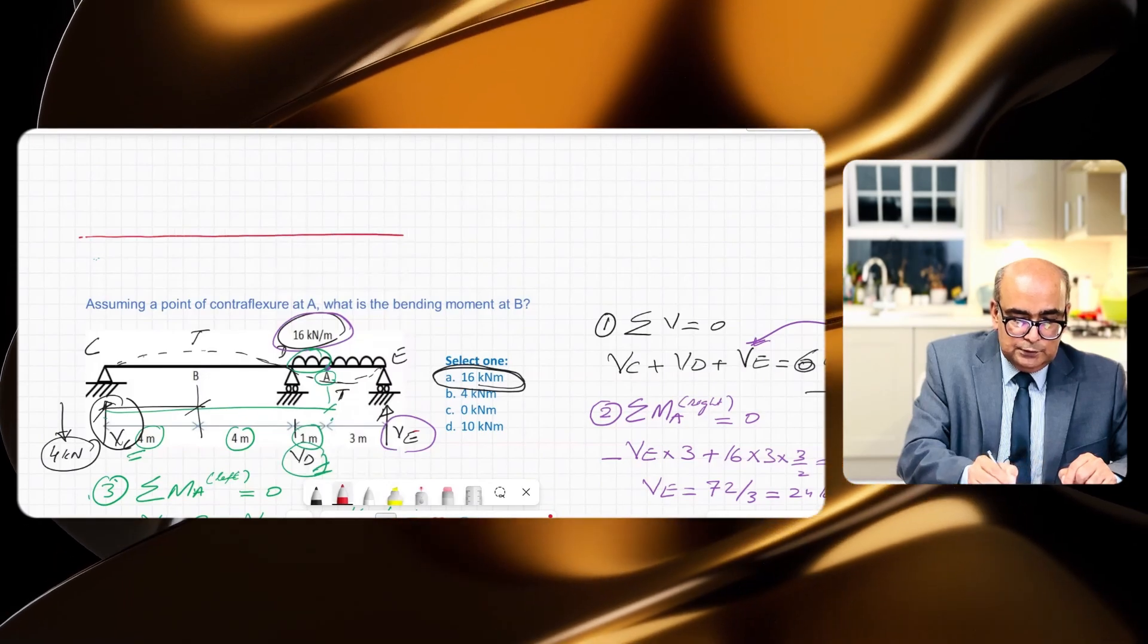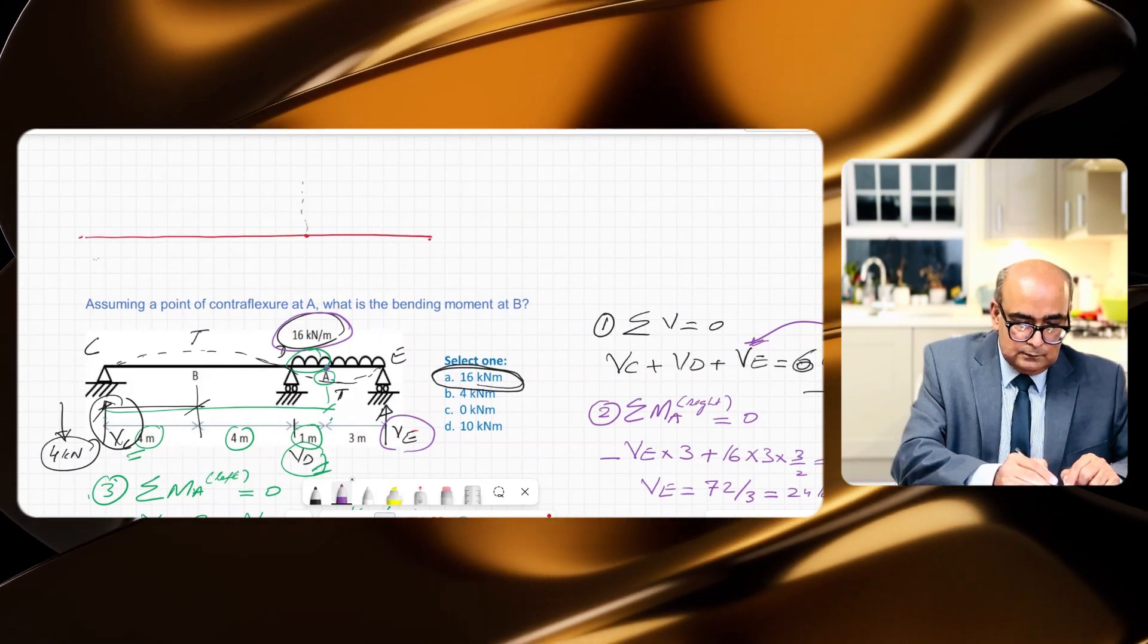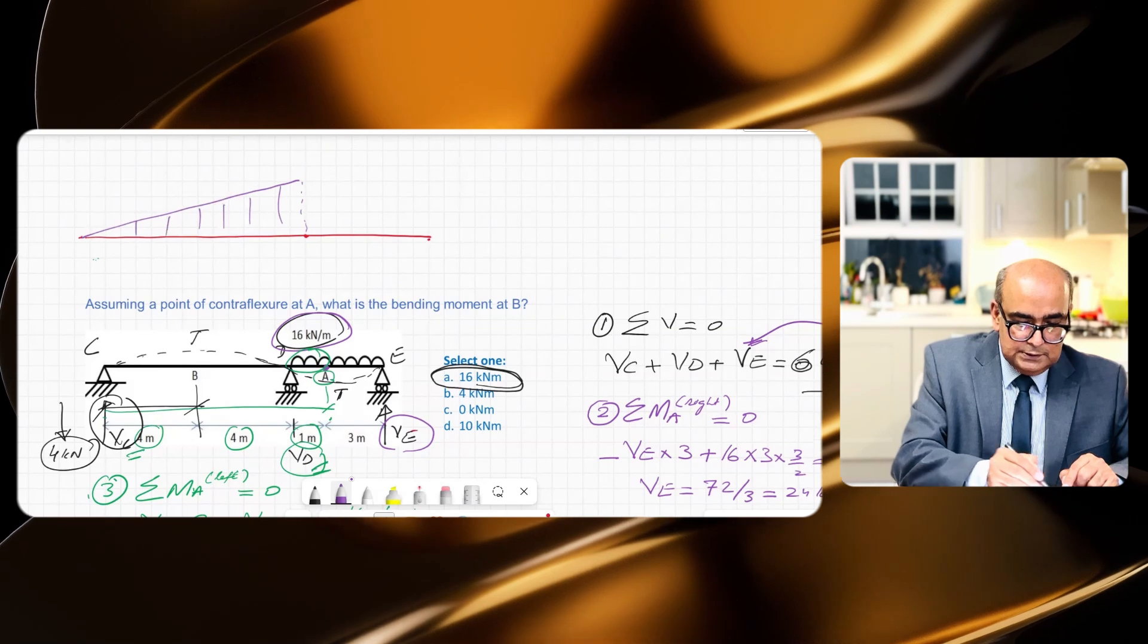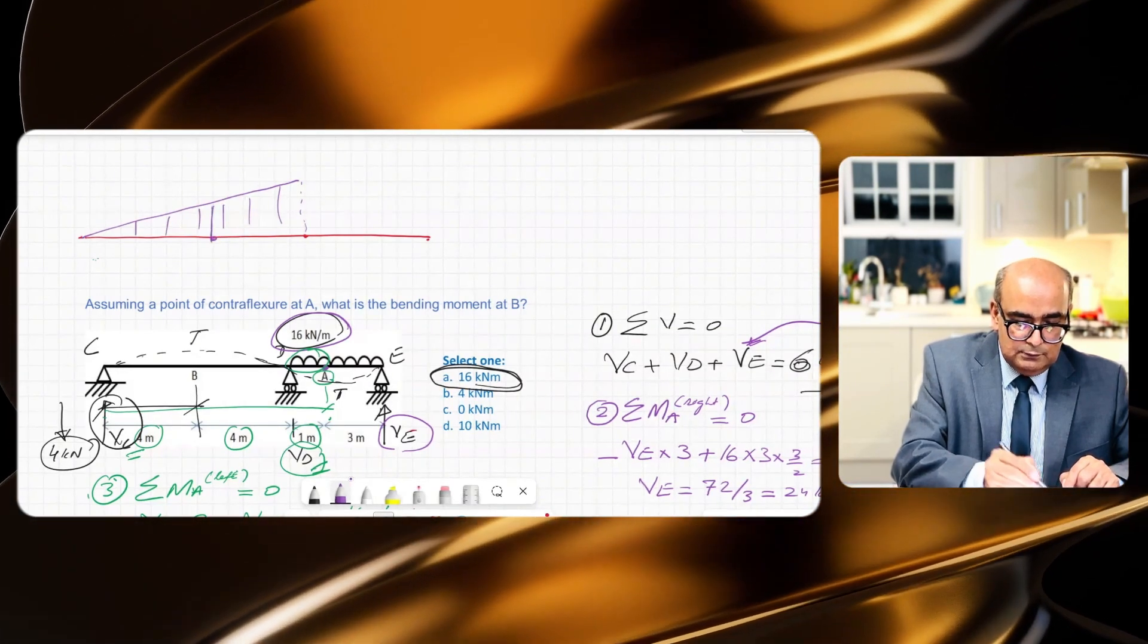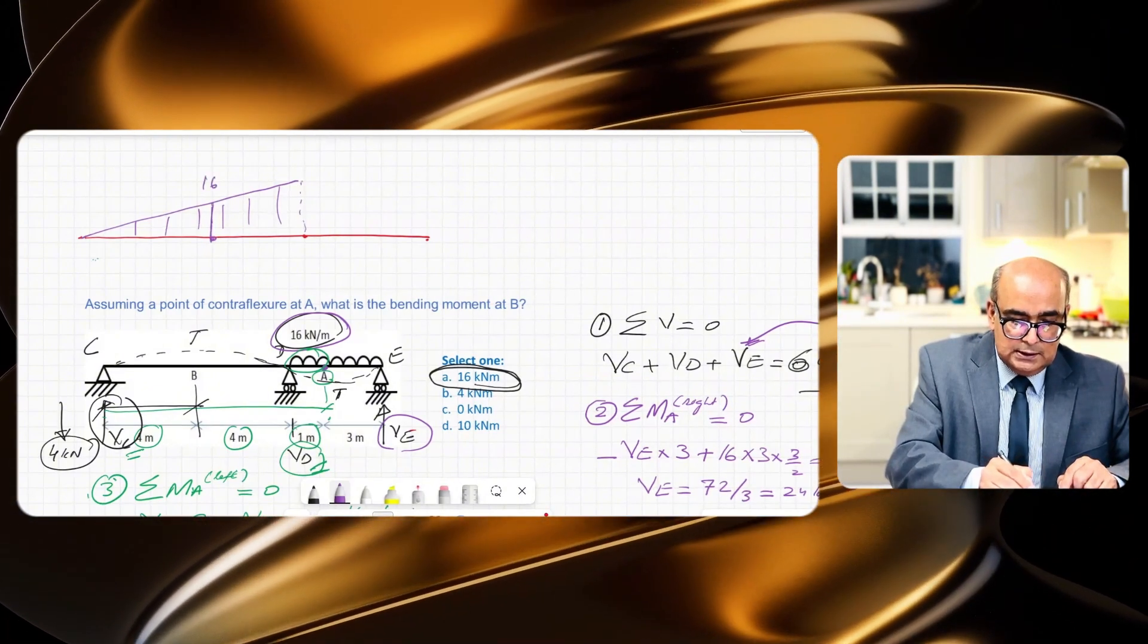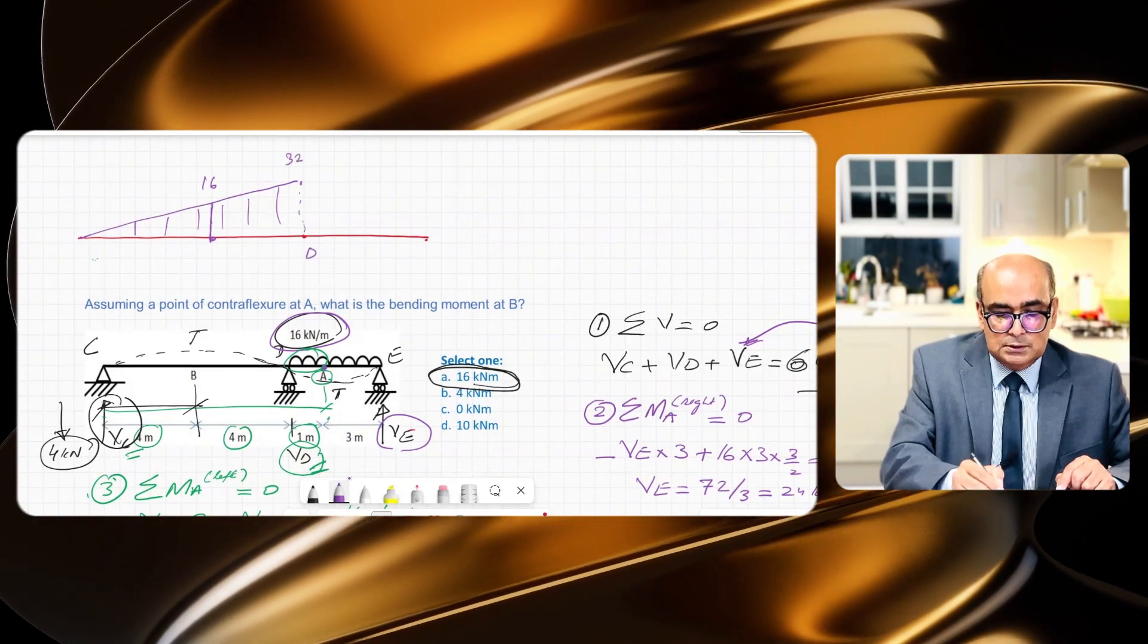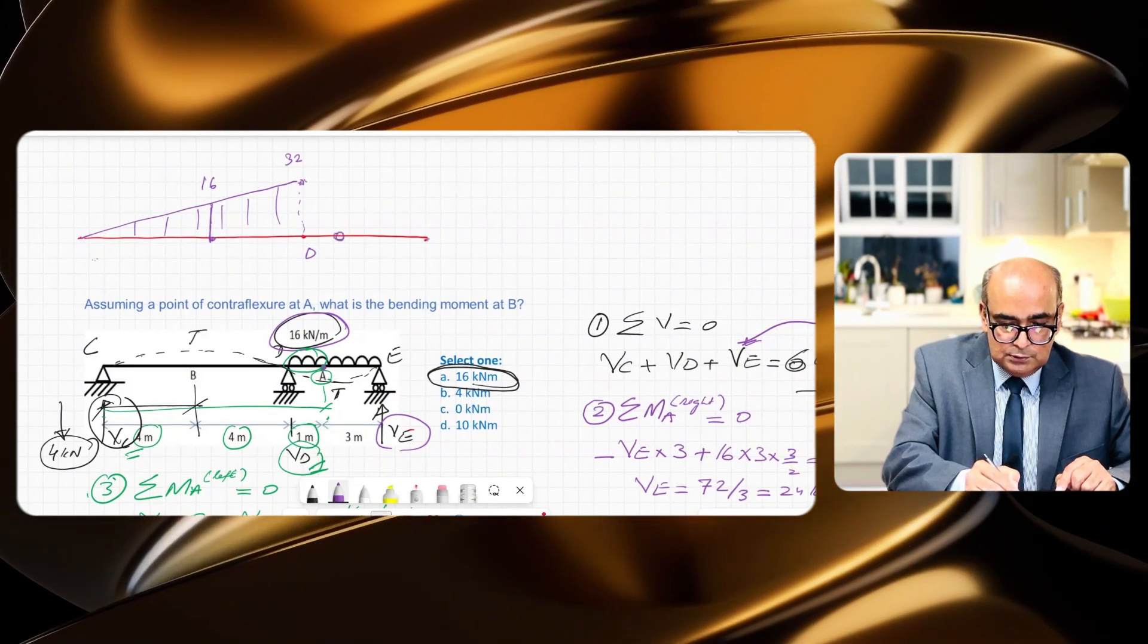If you want, you can plot the bending moment diagram over here. So we have this bending moment, this is point B. At point B we have 16 kilonewton meters, and at this point which is point D, at that point we have 32 kilonewton meters, and then from here it will pass through here.